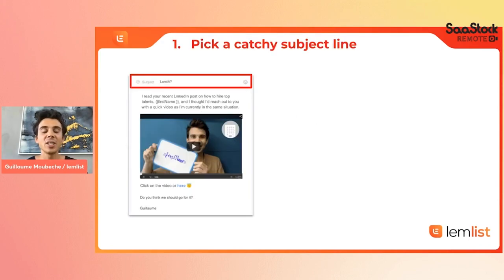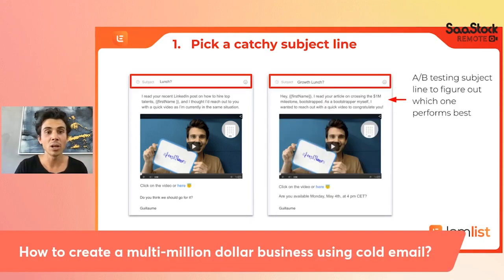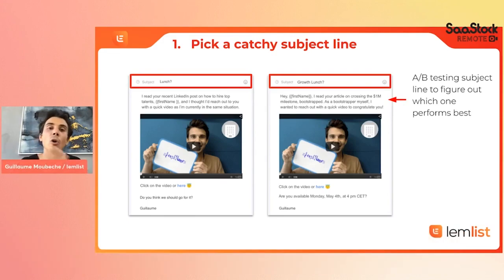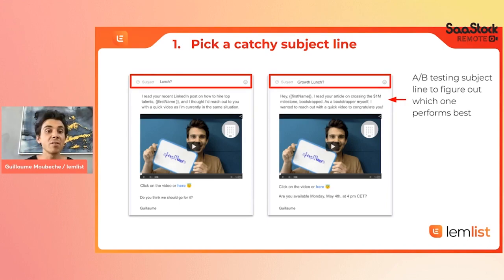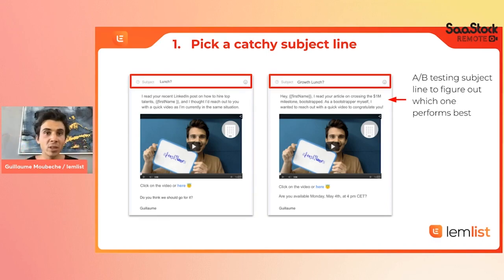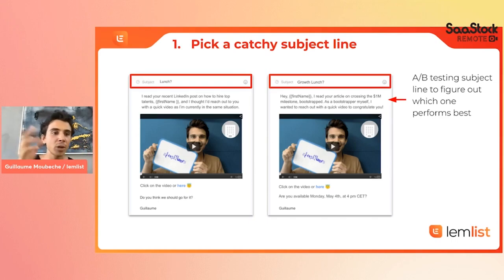First things first: pick a catchy subject line. The subject line is what will help you get your email opened — it needs to trigger curiosity. It can be either casual, like 'Lunch?', or a bit more specific, like 'Growth Lunch.' I was reaching out to Heads of Growth, so I needed something more specific, which I A/B tested. Whenever you run a campaign, always A/B test — that way you're always learning. Quick tips: either make them short and sweet, like 'Lunch,' 'Coffee,' 'Meeting,' 'Partnership,' or make them super specific — for example, 'Let's meet at SaaStock, [first name].'